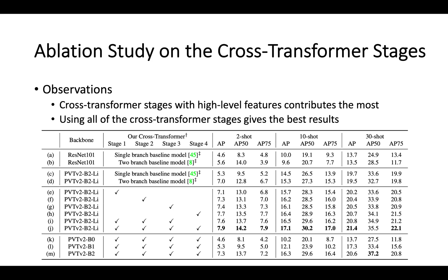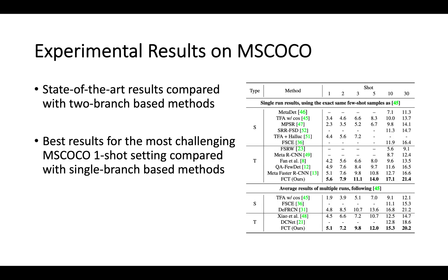Our major observations are that cross-transformer stages with high-level features contribute the most, and using all cross-transformer stages gives the best results. We achieve state-of-the-art results compared with two-branch-based methods, and the best results for the most challenging MS-COCO one-shot setting compared with single-branch-based methods.